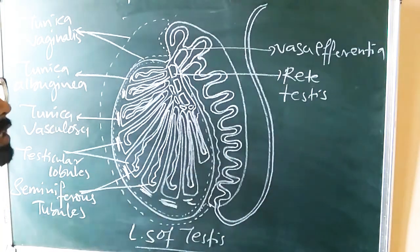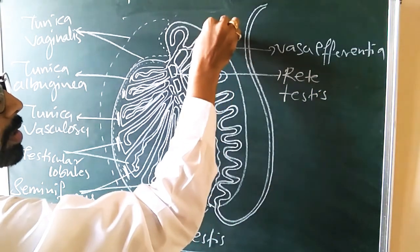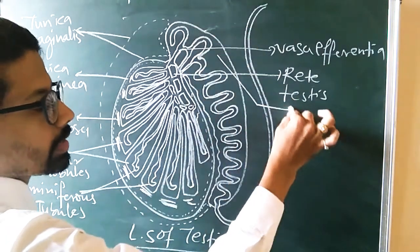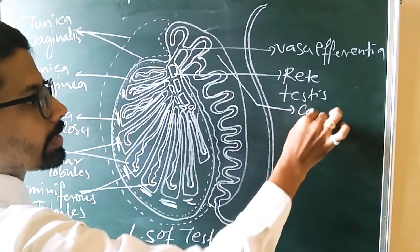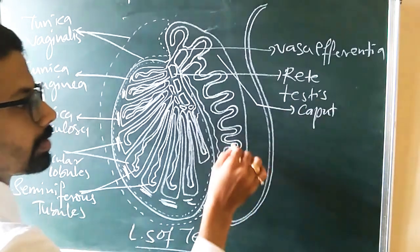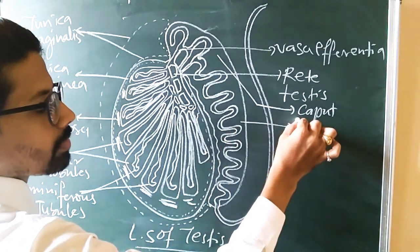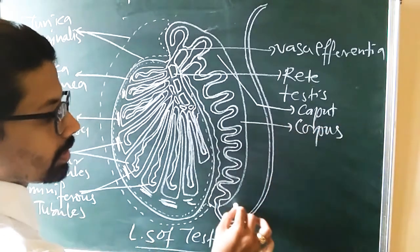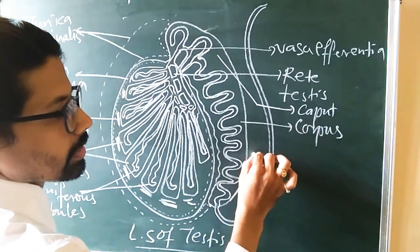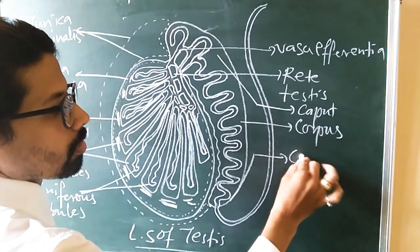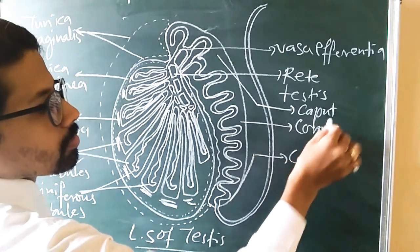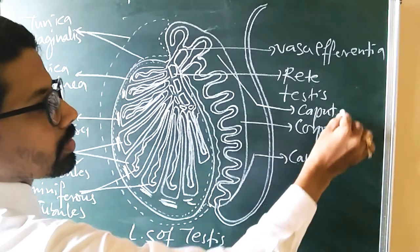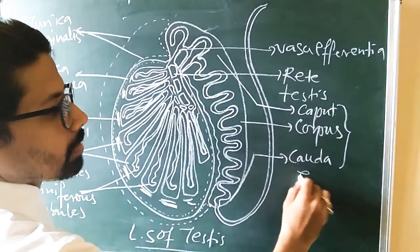This region you can label as vasa efferentia. The upper portion is the caput part of the epididymis, this is the body of the epididymis which is also called corpus, and this region is the cauda or tail. So caput means head, corpus means body, and cauda means tail — these are the parts of the epididymis.